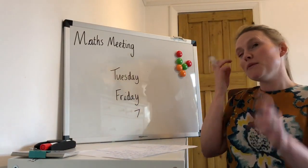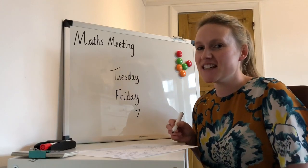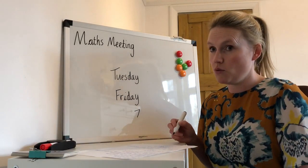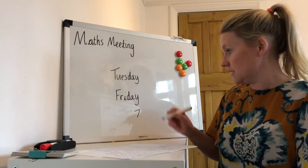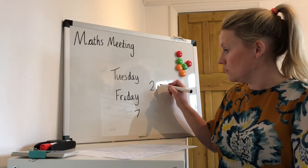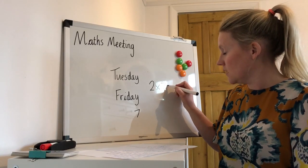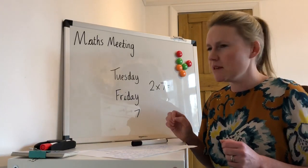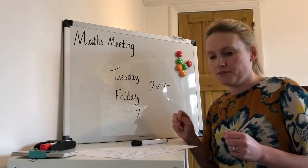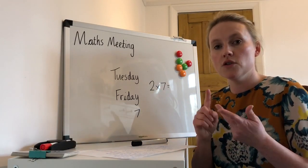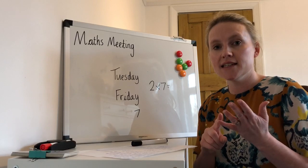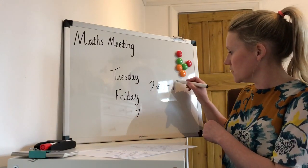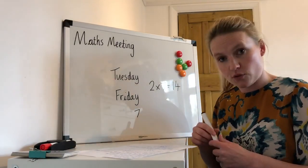So maybe one more question. How many days are there in two weeks? We might need to use our two times table for this. So two times seven equals — shall we count in twos, seven times? Two, four, six, eight, ten, twelve, fourteen. That's right, so the answer is 14.